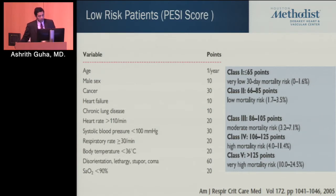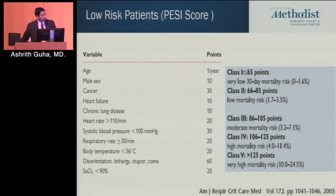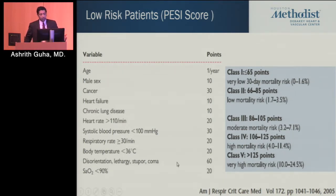For low-risk patients, this has been fairly well established and validated over the last 10 years. This goes back to a study in 2005 where they tried to risk stratify patients who could benefit from outpatient treatment when diagnosed with PE. Using multivariate analysis, they came up with a risk score with about 11 characteristics — largely basic patient characteristics with no biomarkers and no real RV evaluation.